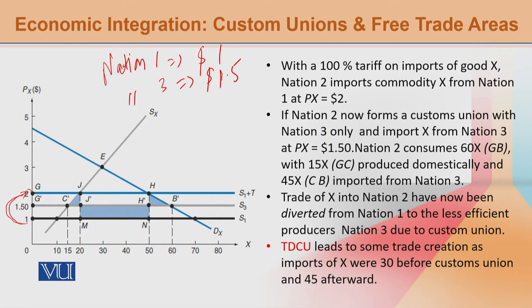At this price level, the domestic supply is $20, the demand is $50, and the trade is $30. Here, revenue collection from the state is 30 — that is, 1 times 30 — which is what we have traditionally learned.